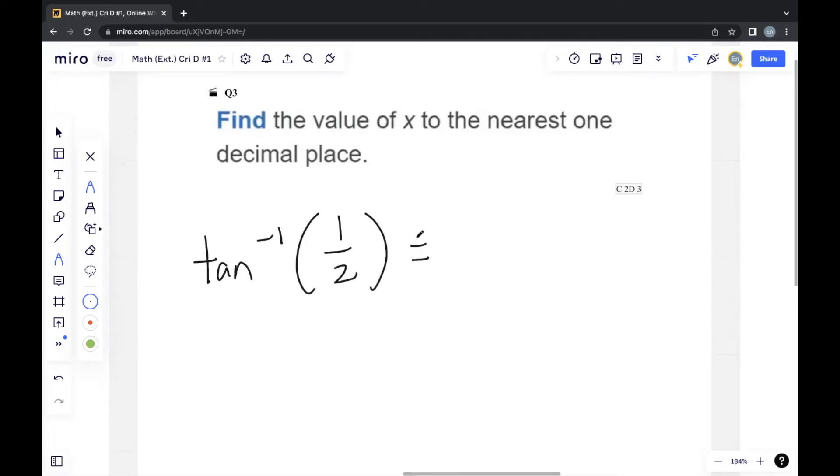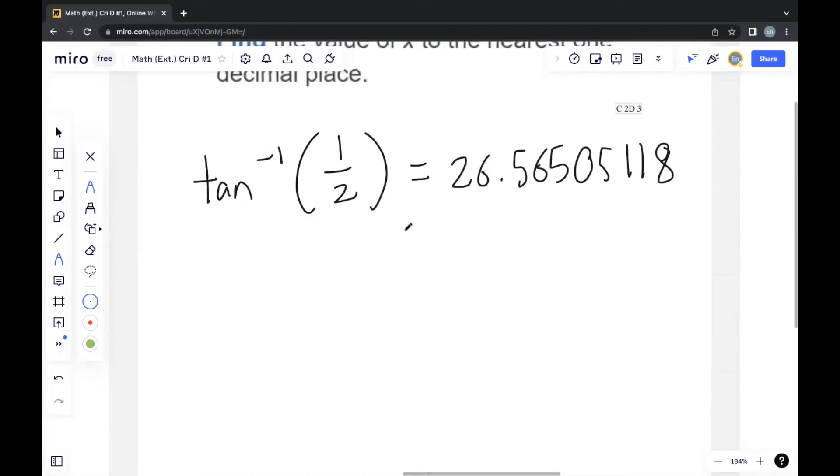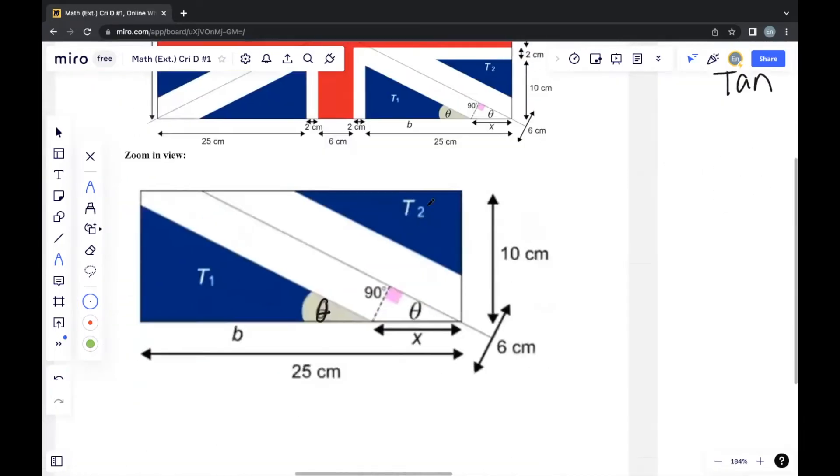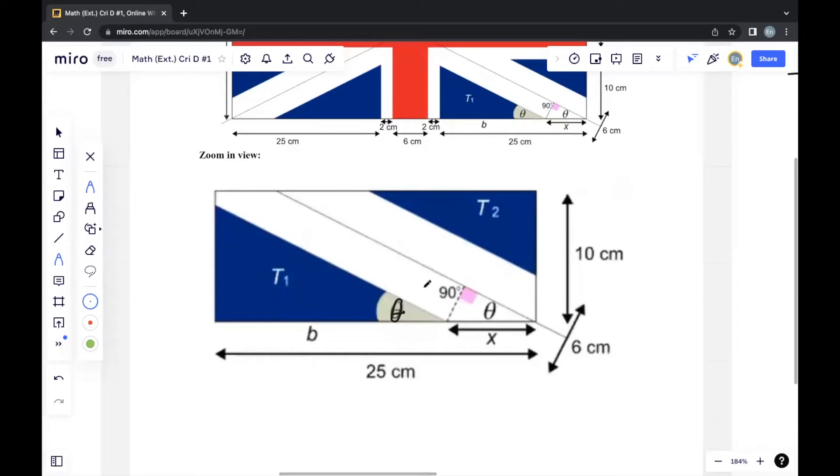Using a calculator, we'll be getting 26.565. So we already have this value, which is 26.6. The fact that they showed this is a right-angled triangle means they most likely want us to use that triangle.